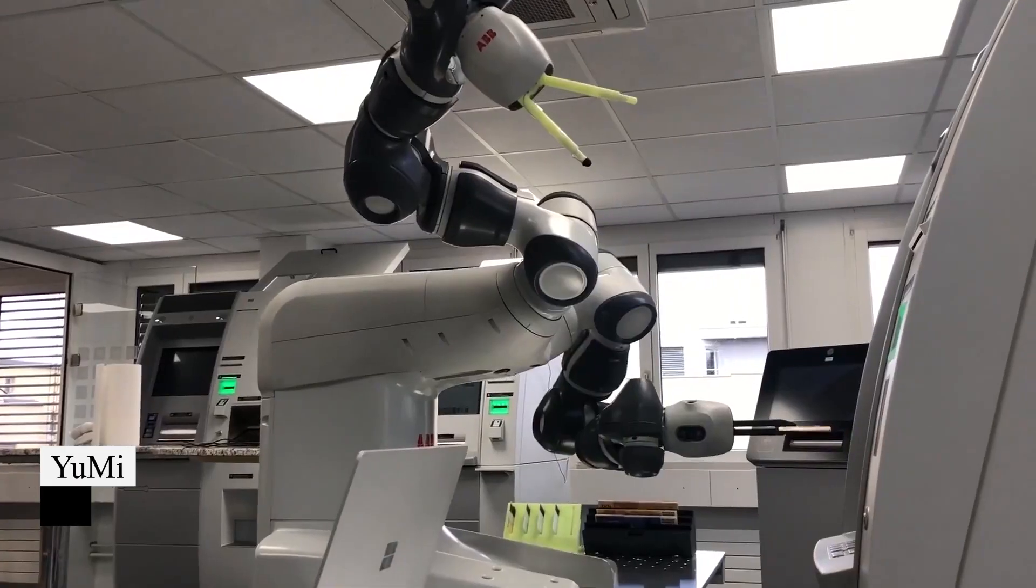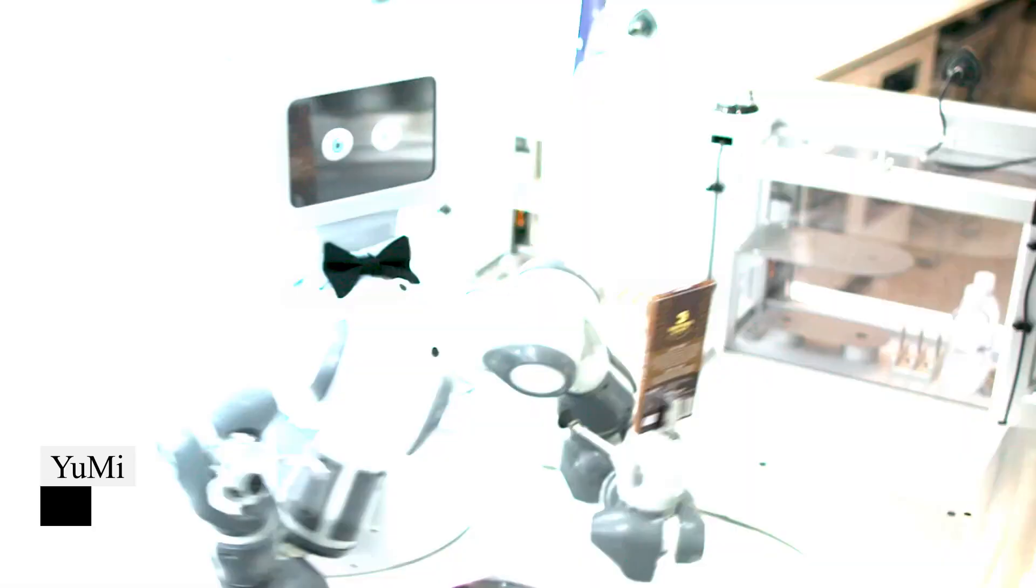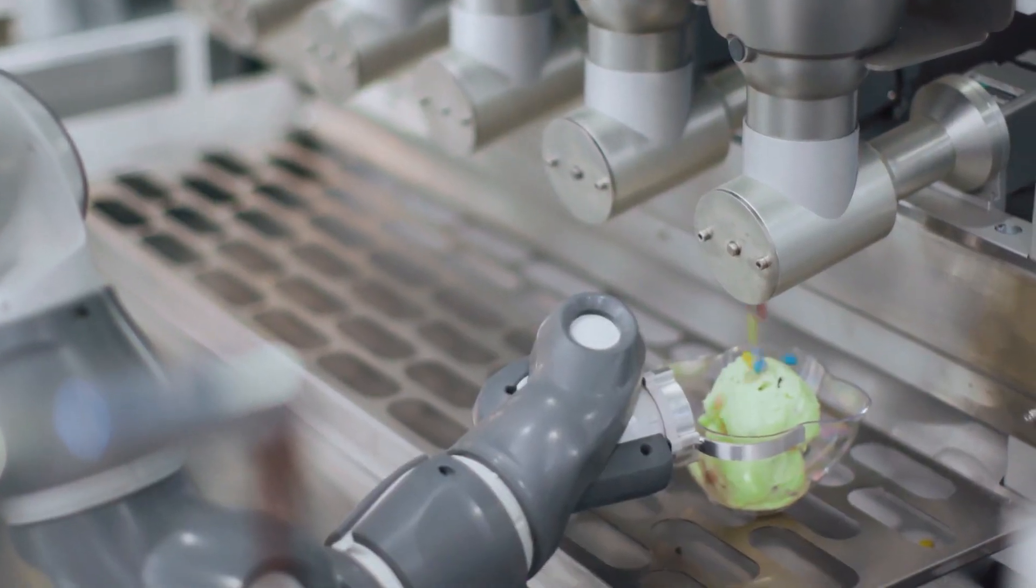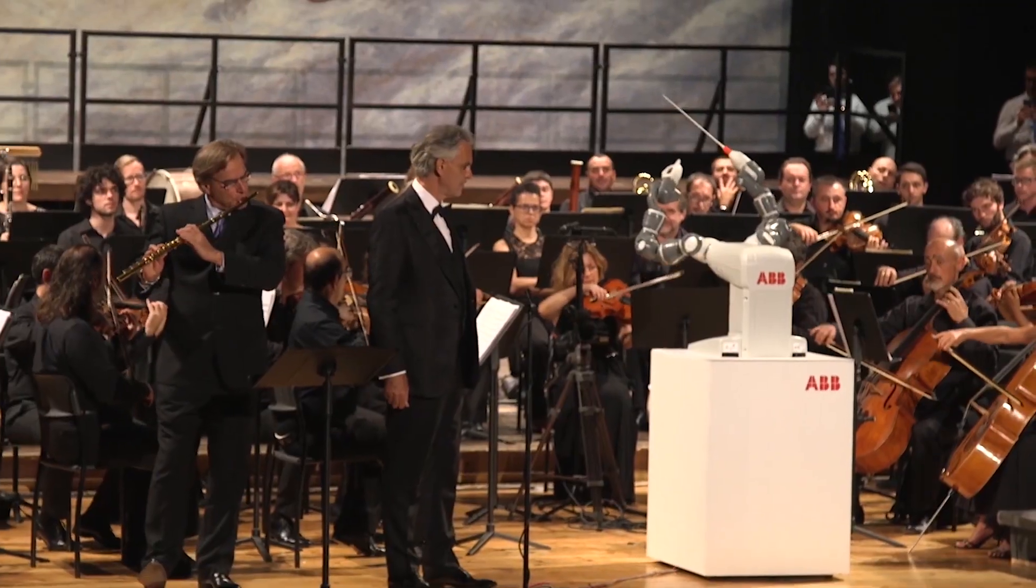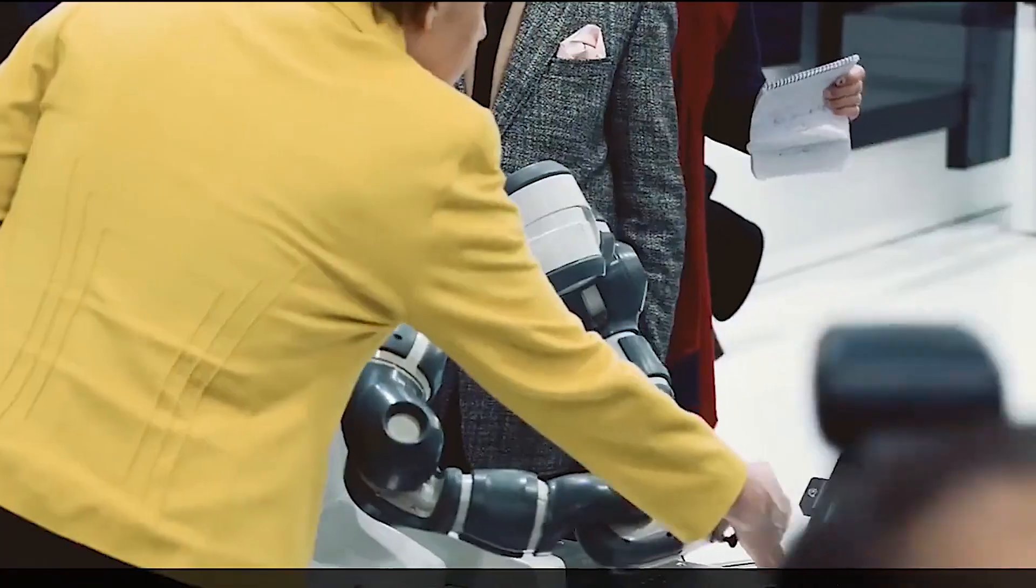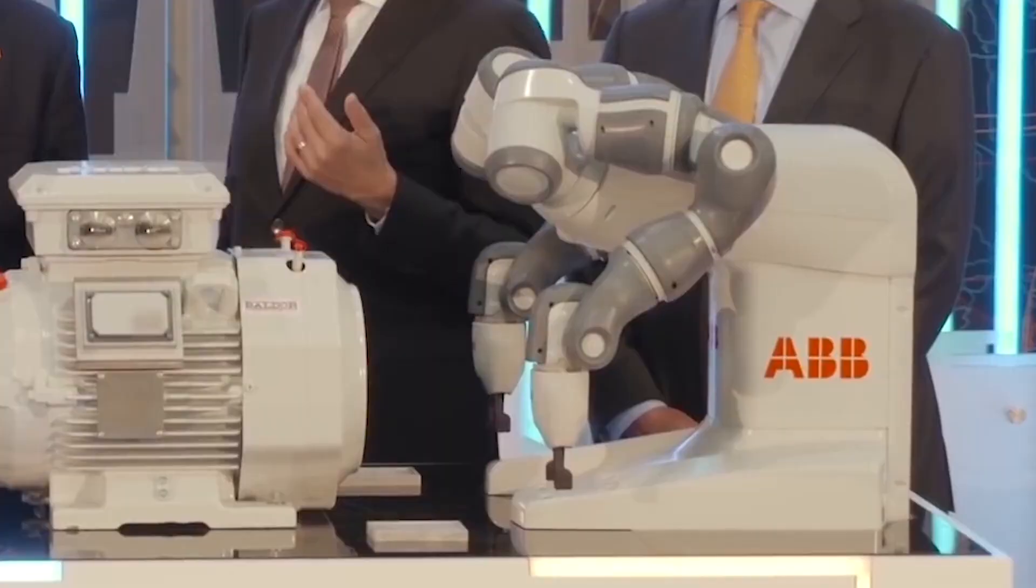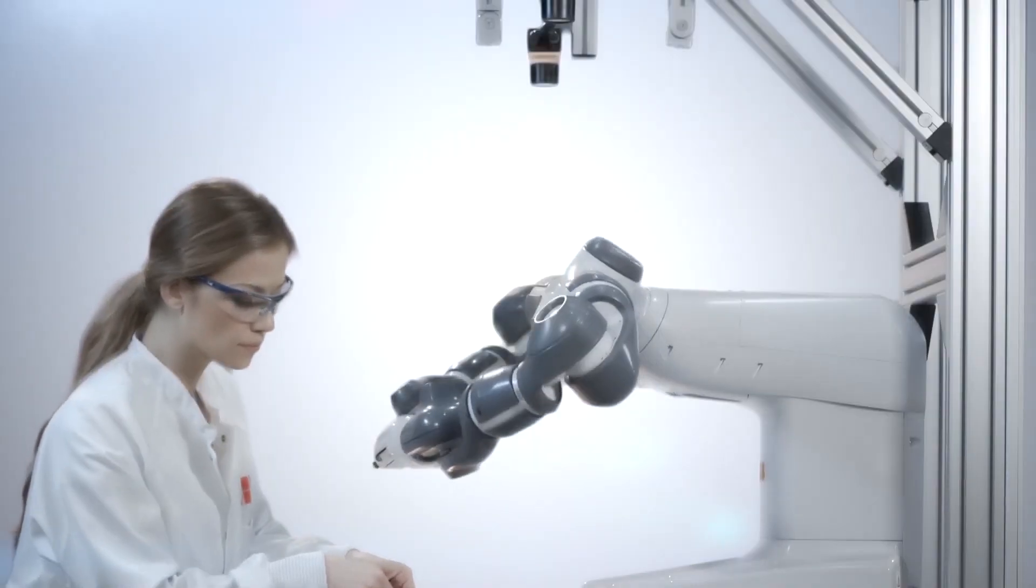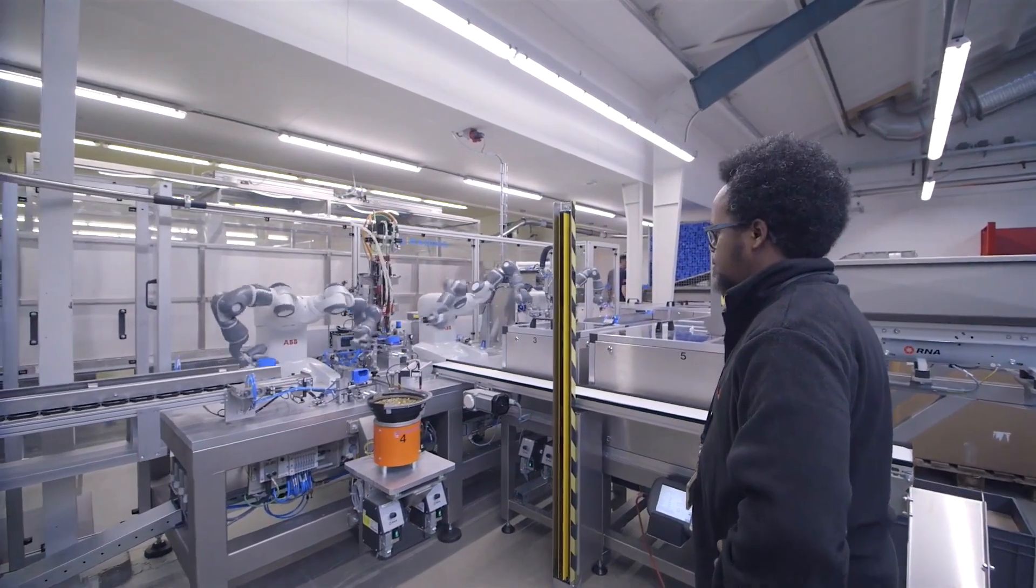UMI. ABB's UMI robot enhances production with dual and single-arm options, optimizing processes for Industry 4.0. Compact and precise, it safely collaborates with humans, featuring collision detection and adaptive learning capabilities through lead-through programming.